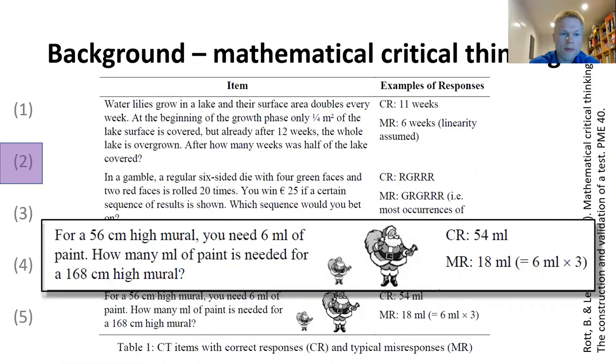Another example is this item: For a 56 centimeter high mural, you need six milliliters of paint. How many milliliters of paint is needed for a 168 centimeter high mural? Most participants see this connection of 56 and 168 if this is a factor of three.